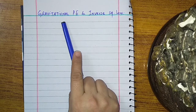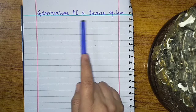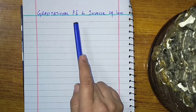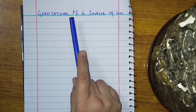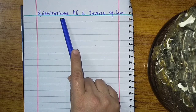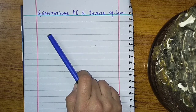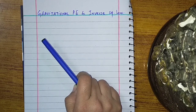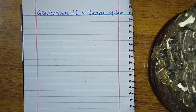Today's topic is Gravitational Potential Energy and the Inverse Square Law. We all know that potential energy is the energy of a body due to its position. When it comes to the term gravitational, this means the product of the weight of a body and its height from some reference level — that is known as Gravitational Potential Energy.